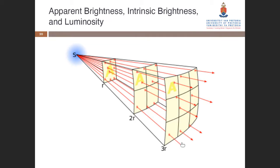That's why the Square Kilometre Array is such an important project — it will have a telescope with a surface area of one square kilometre. When you capture a galaxy, do you take one portion of it and infer the rest? Yes — there are two ways: we can infer the rest of the information, or we can do a scanning observation.